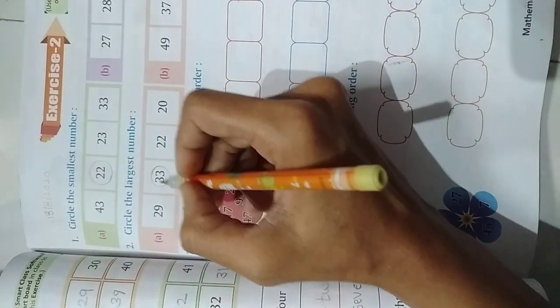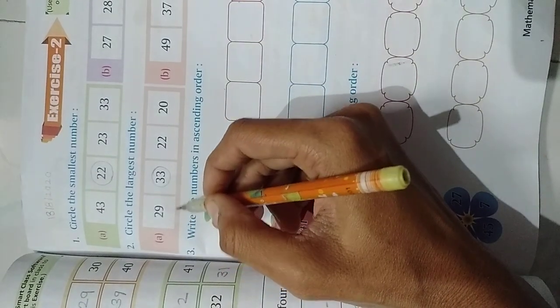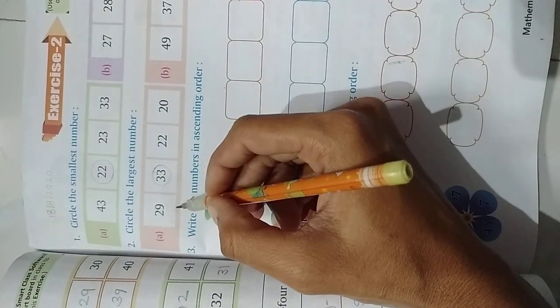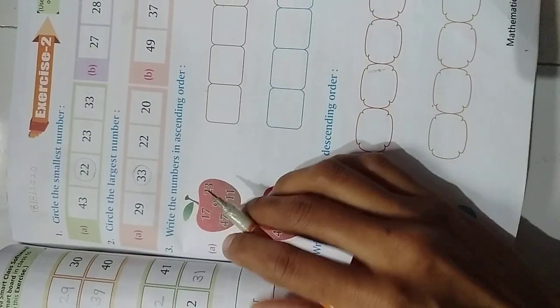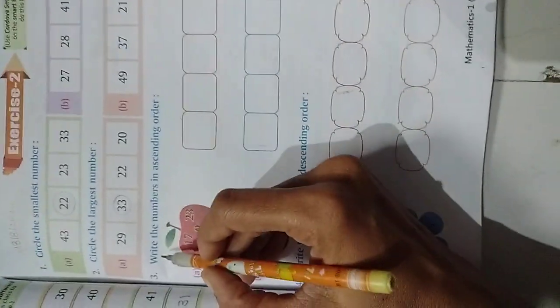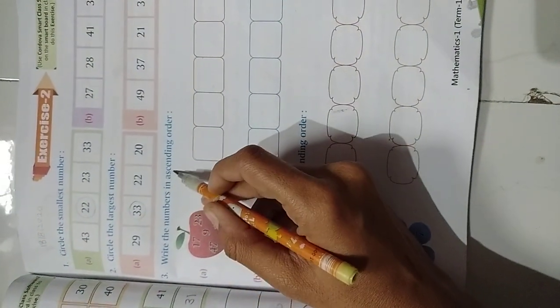Or you can simply say which number is bigger. Here 33. Right. Now going to solve next one. Write the numbers in ascending order.